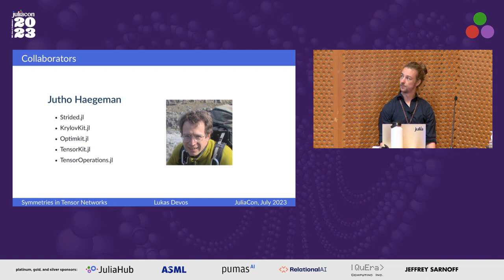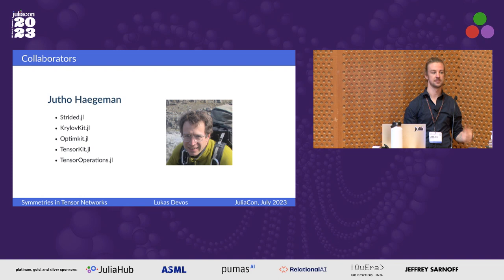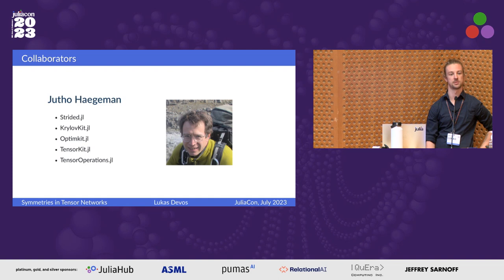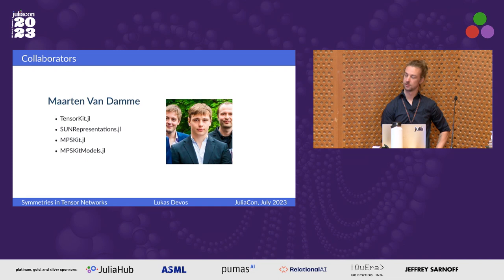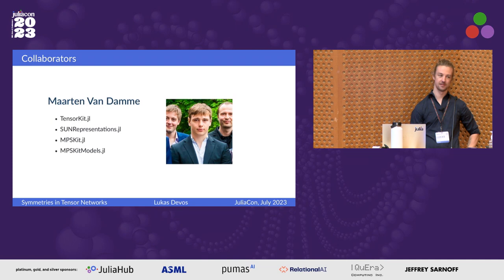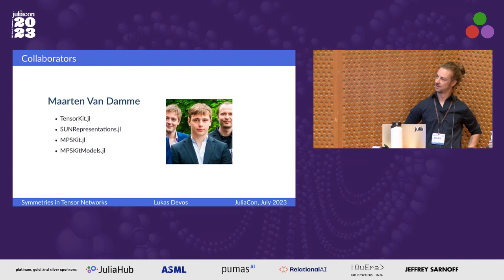I want to give a shout out to two people from Ghent who are the main authors of most of the software we're using. The first is Professor Jeter Hagerman, the main author of TensorKit and TensorOperations, the two packages I want to highlight today. He's also been a really active member of the Julia community and has authored multiple community-wide packages. The second is Martin Van Damme, who is here in the audience today. He basically gave us most of the tensor network libraries we use to run simulations, giving all the people from Ghent the tools to run their numerics.